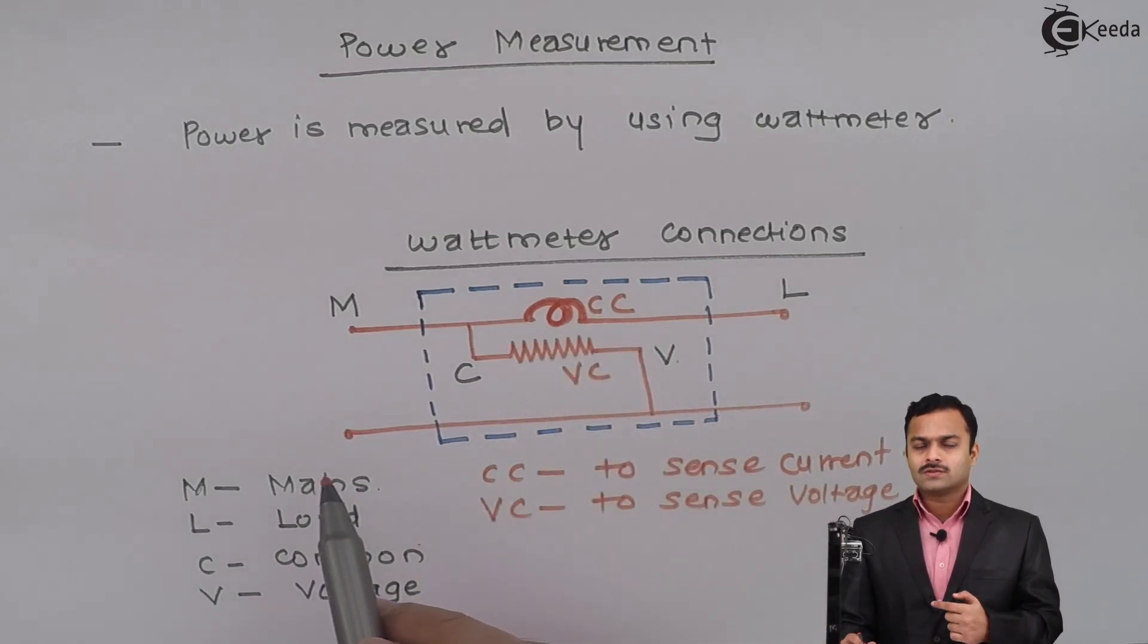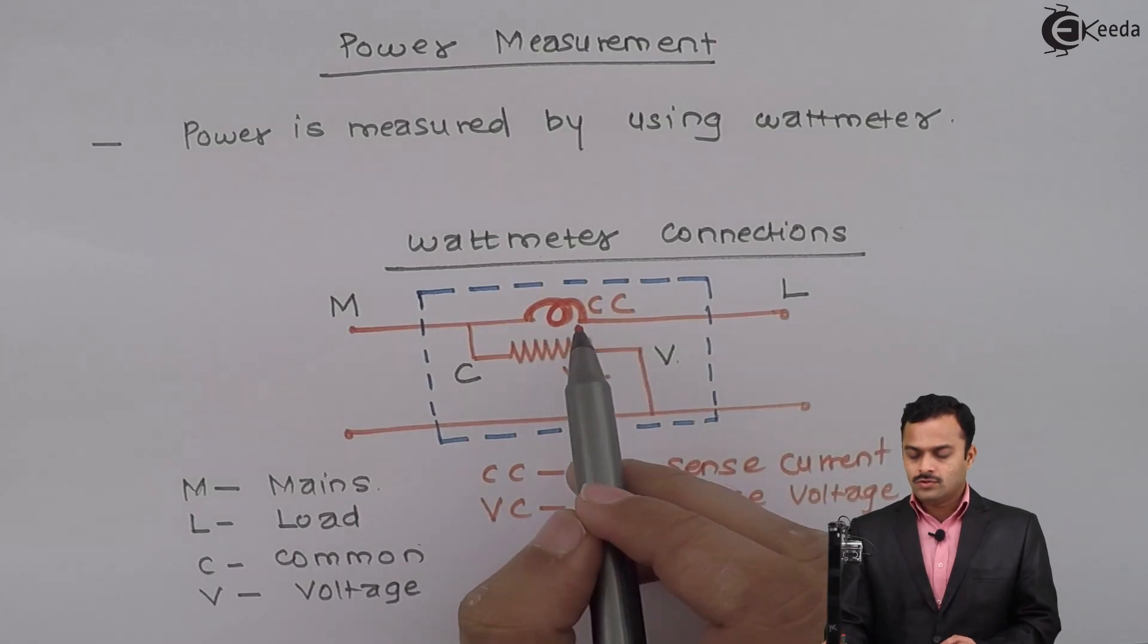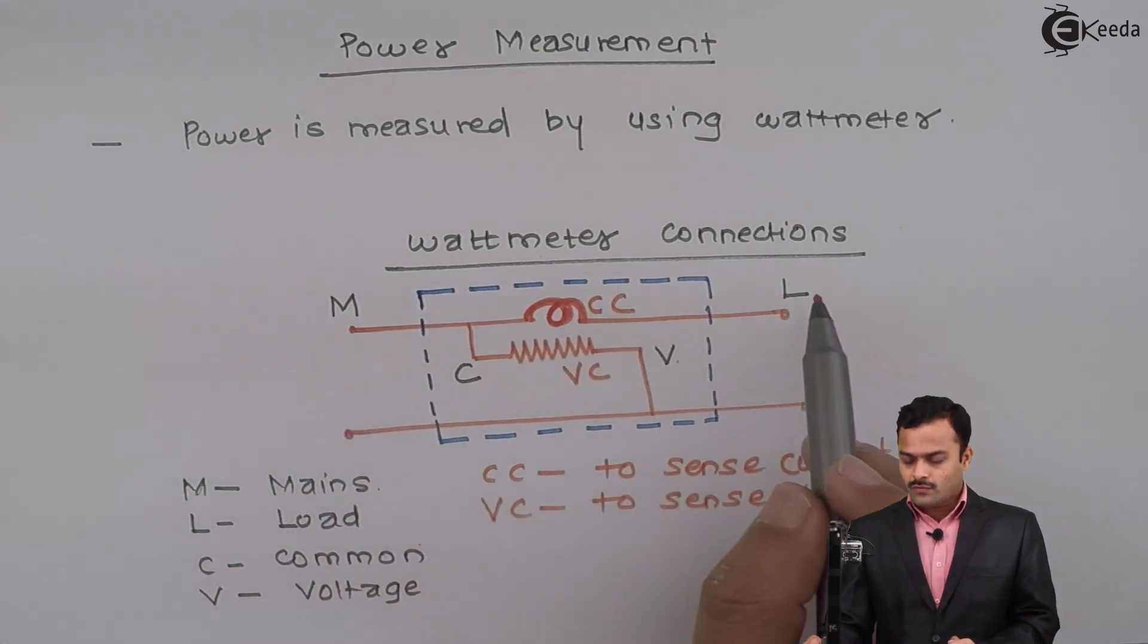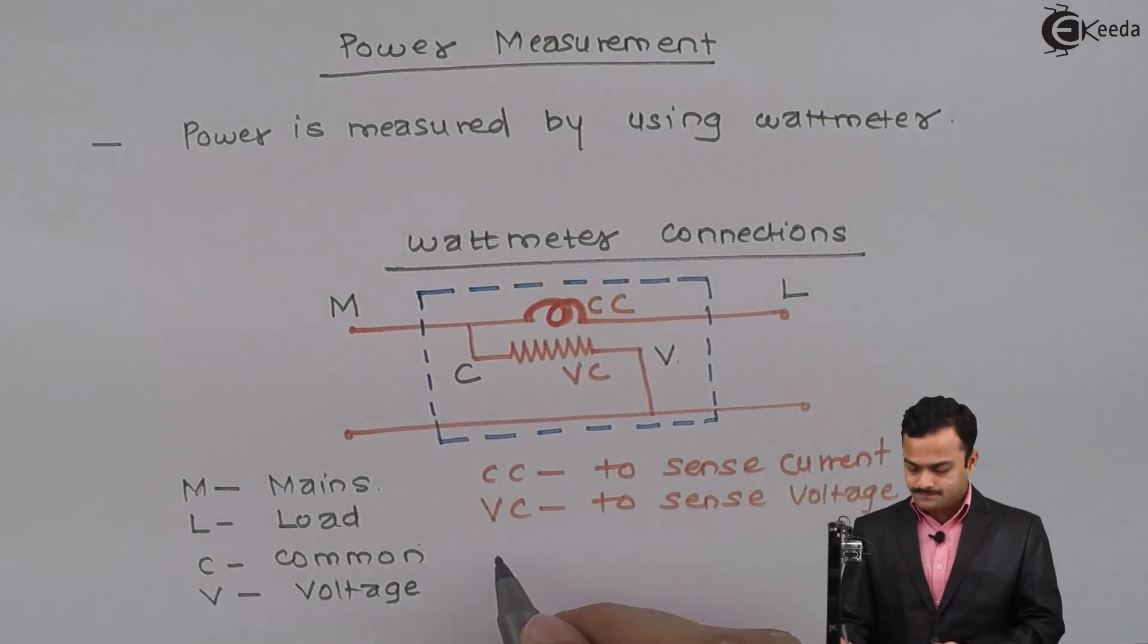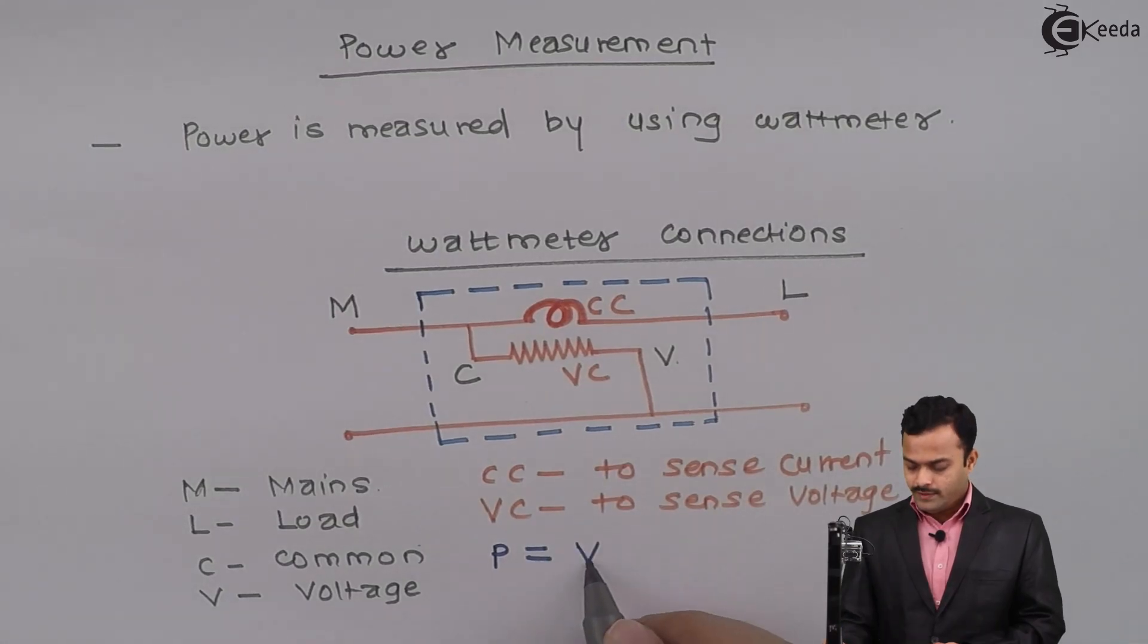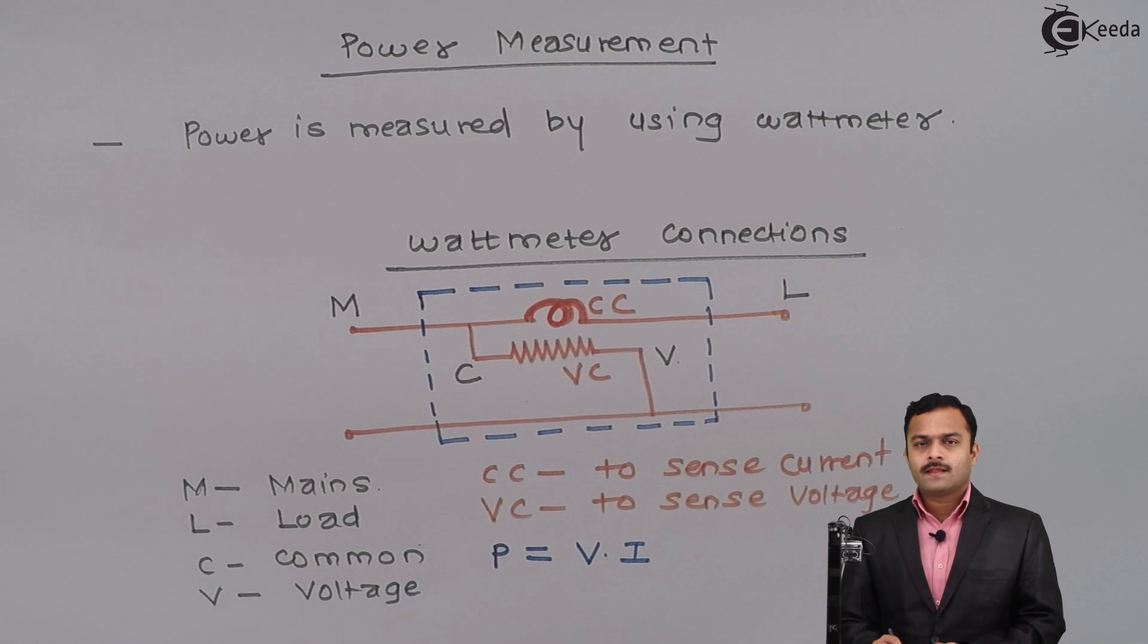Basically, from the wattmeter, how we are getting power—the expression is simple. Power is nothing but V into I.